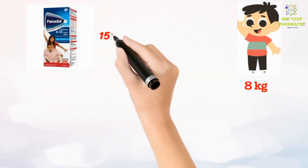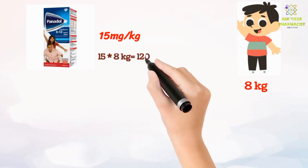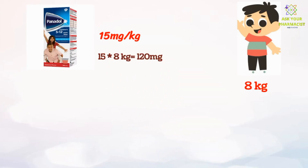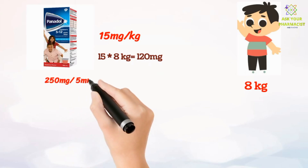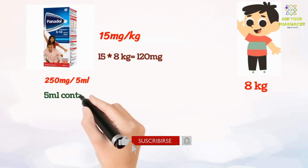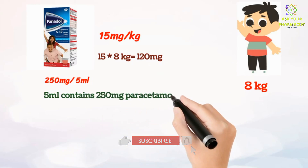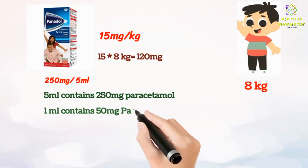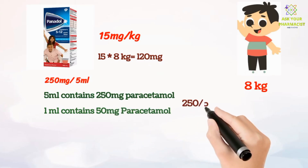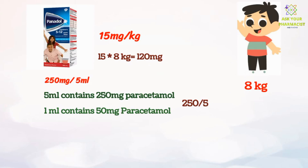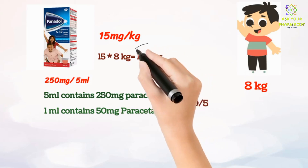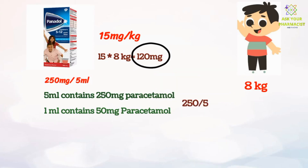Taking weight as 8 kg, and knowing the dose for paracetamol is 15 mg per kg, so 15 multiplied by 8 is 120 mg. Now in Panadol 250 mg per 5 ml, each 5 ml contains 250 mg of paracetamol, so 1 ml contains 50 mg — obtained by dividing 250 by 5. The total dose for 8 kg is 120 mg; dividing by 50 mg per ml, we get approximately 2.5 ml to give to your child, repeated after every 4 to 6 hours.